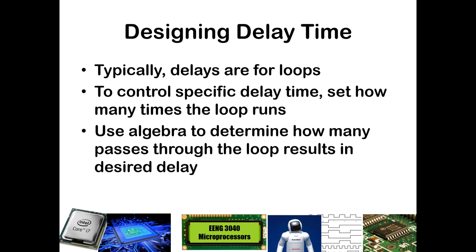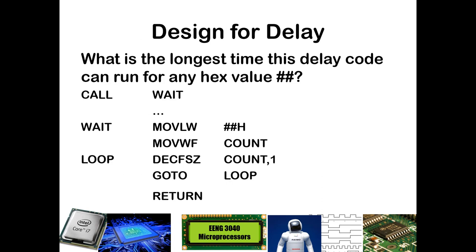We can also design for a delay time. Typically, to design a delay subroutine, we would use a for loop — initialize a counter, determine how many times we want to go through the loop, and just decrement. In some cases we would add NOPs to allow the delay loop to take a little bit longer. We can use algebra to determine how many passes through the loop will result in our desired delay. If this is our basic loop structure for a wait subroutine, we can ask: how long would be the longest time this delay code could run for any number we could put in?